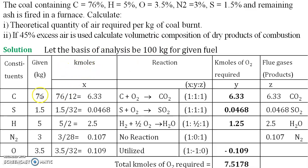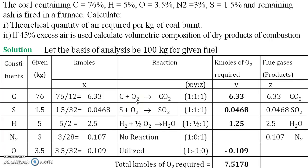So first write down the components, then write down their individual given data. For example: carbon 76, sulfur 1.5, hydrogen 5, nitrogen 3, oxygen 3.5. Moisture and ash are not significant because they do not participate in burning and are not obtained in the product gases.